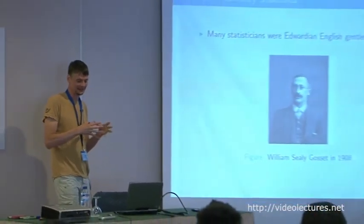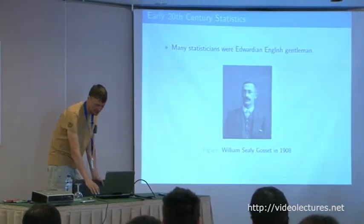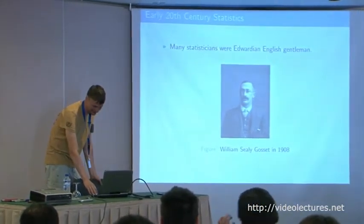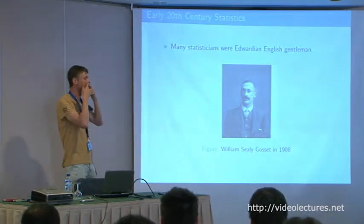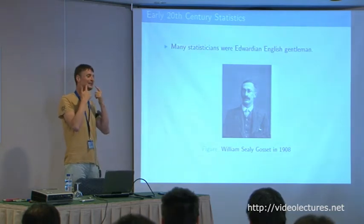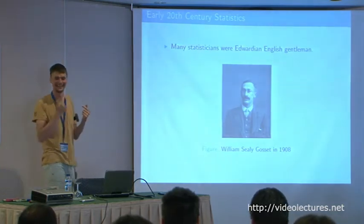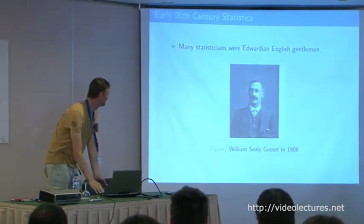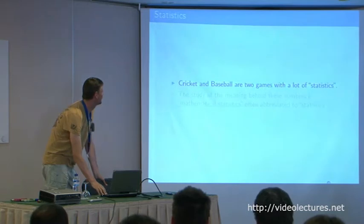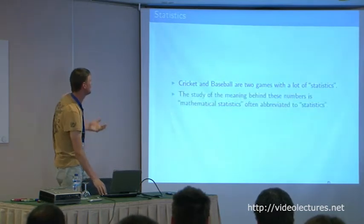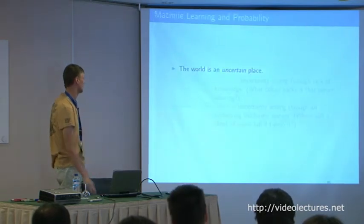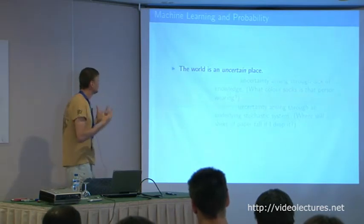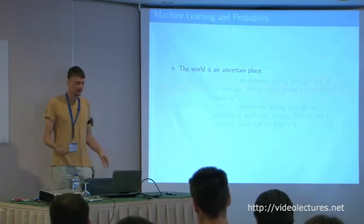William Seeley Gossett — I like to think of early statisticians as Edwardian English gentlemen. Statistics is really about computing numbers; mathematical statistics is the world that we're interested in. So machine learning and probability: where does probability come into machine learning? The world is an uncertain place.